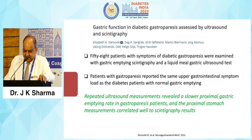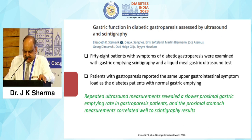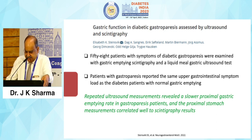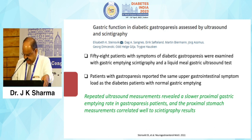Gastric function in diabetic gastroparesis is assessed by ultrasound. In one particular study, 58 patients with symptoms of diabetic gastroparesis were examined with gastric emptying scintigraphy and a liquid meal gastric ultrasound test. These patients with gastroparesis reported the same upper GI symptom load as diabetic patients with normal gastric emptying. However, ultrasound measurement revealed a slower proximal gastric emptying rate in gastroparesis patients, and the proximal stomach measurement correlated well with scintigraphy results.